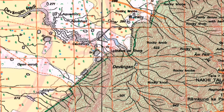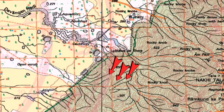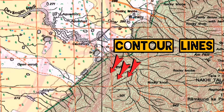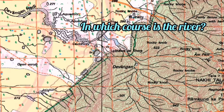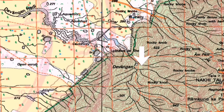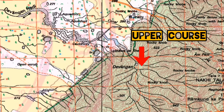So here on one side of the map, can you see the brown lines? They are contour lines — they represent a hill. So in which course are these rivers or streams? You see these thin black lines — these are seasonal streams. So here in this part of the map, the river is in the upper course. It has just started from the hill.